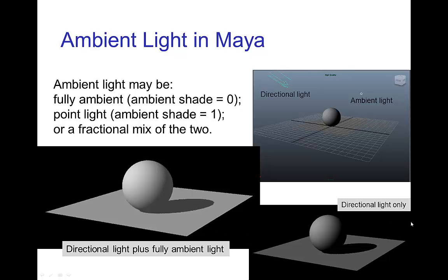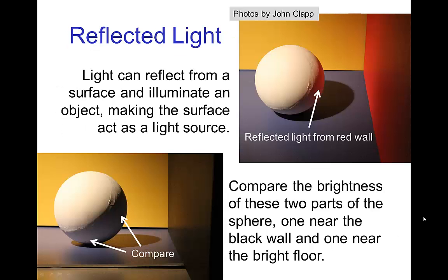You can compare that with having just the directional light. Now, as I said, the source of ambient light is often the reflection off of various surfaces in the environment.